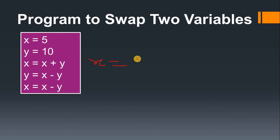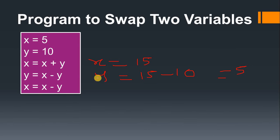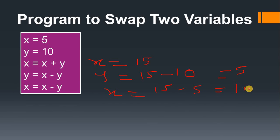Here x is 5 and y is 10, so x becomes 15. Then y equal to x minus y: x is now 15 and y was 10, so 15 minus 10 gives 5 — y is now 5. Then x equal to x minus y: x is 15 and y is now 5, so 15 minus 5 gives 10. X was originally 5 and is now 10, so we have interchanged the values without using the third variable.